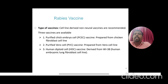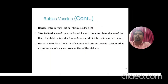Cell line derived non-neural rabies vaccines are recommended. Three vaccines are available: purified chick embryo cell culture vaccine prepared from chicken fibroblast cell line; purified Vero cell vaccine (PVCV) prepared from Vero cell line; and human diploid cell (HDC) vaccine derived from Wi-38 human embryonic lung fibroblast cell line. Routes of vaccination include intradermal or intramuscular injection — the deltoid area of the arm for adults and the anterolateral area of the thigh for children aged less than 2 years. Never administer in the gluteal region, as fat in that area decreases the antigenicity of the vaccine. One intradermal dose is 0.1 ml; one intramuscular dose is an entire vial irrespective of vial size.